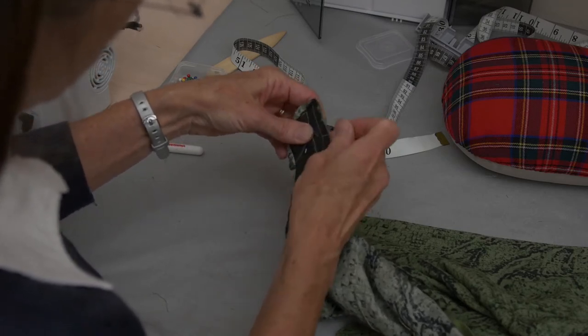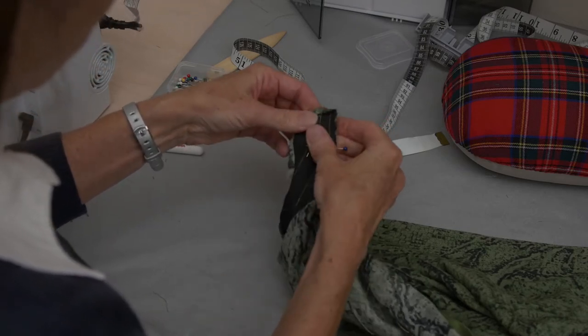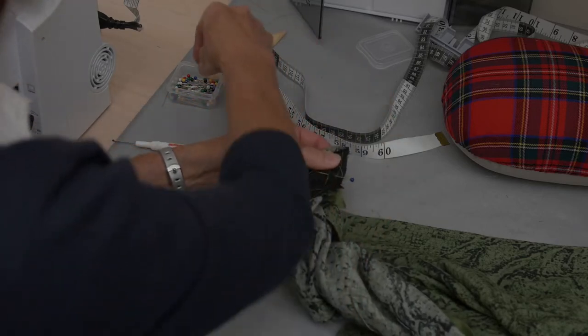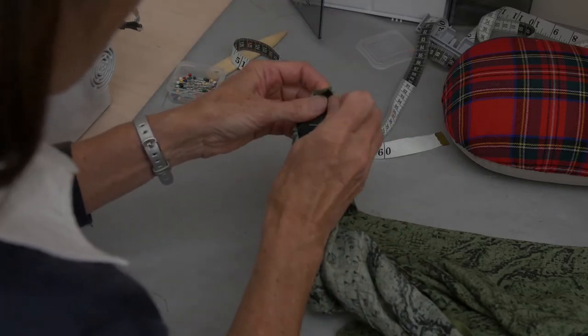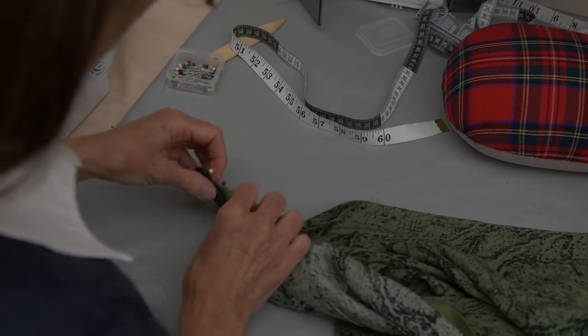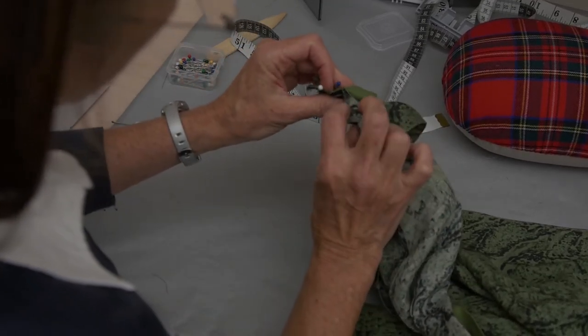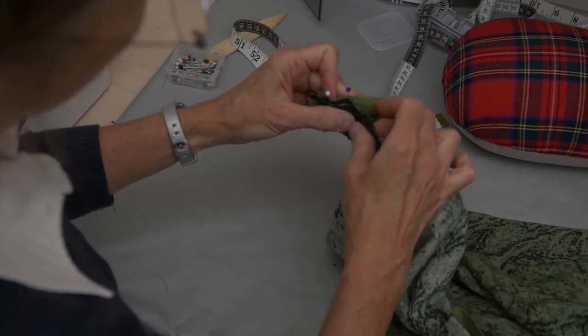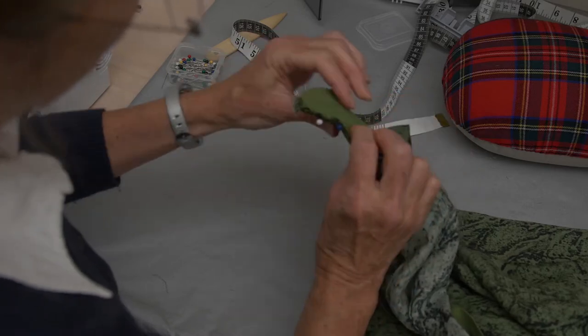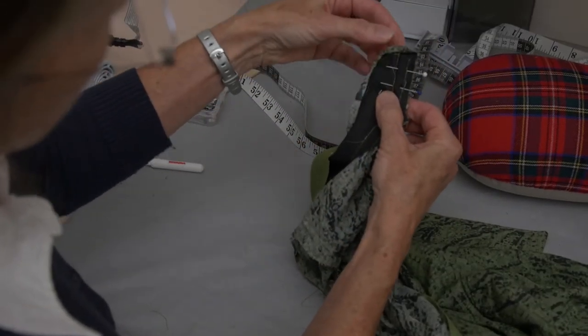So I have burritoed up the shirt, the front of the shirt, and I burritoed the collar itself. And now I'm pinning my collar band to my collar band facing right sides together with all of that wrapped up and rolled up inside of there.